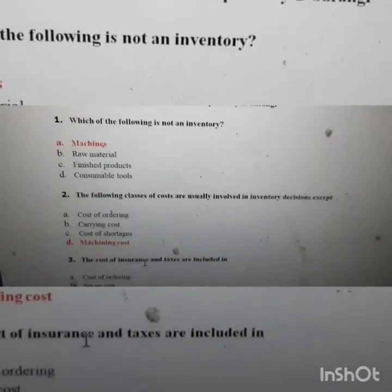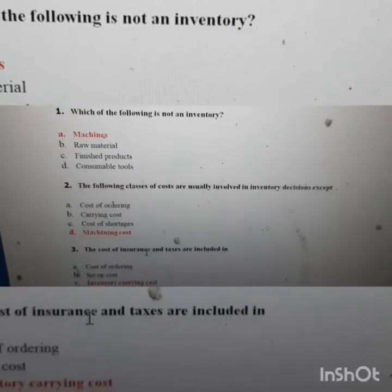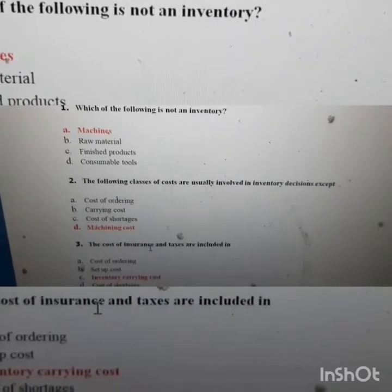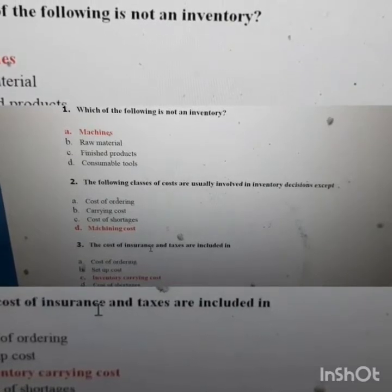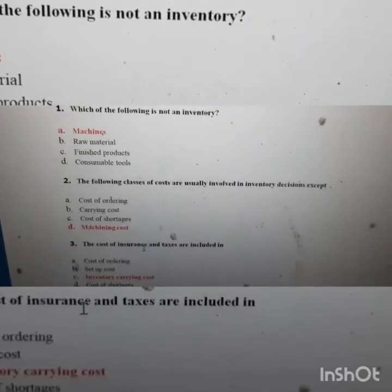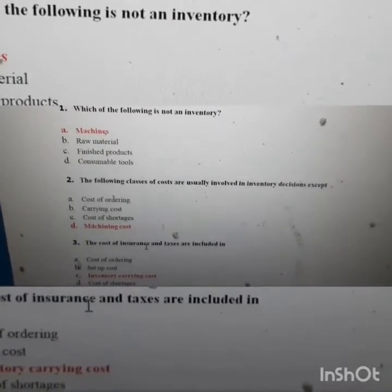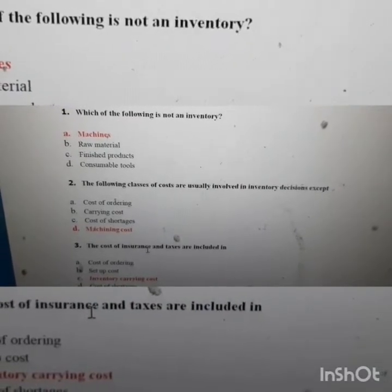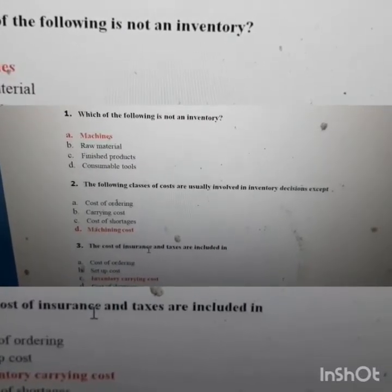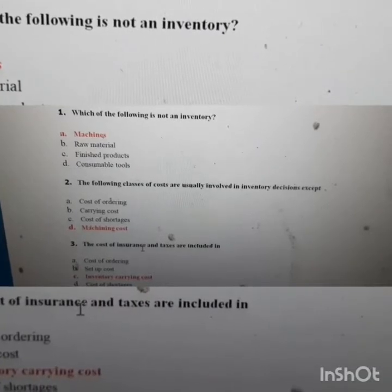Raw material: you initially purchase raw material in a lot, then store it to make your product, so this comes under inventory. Finished product: after making the product — for example, cars — you don't sell them immediately, you store them, so this also comes under inventory. Consumable tools are things you consume during production, like pen, paper, or printer ink. The machine does NOT come under inventory.